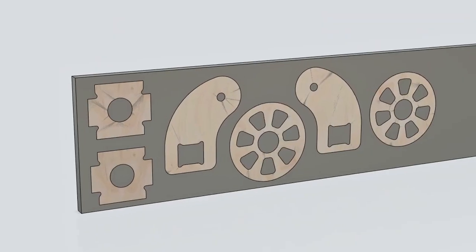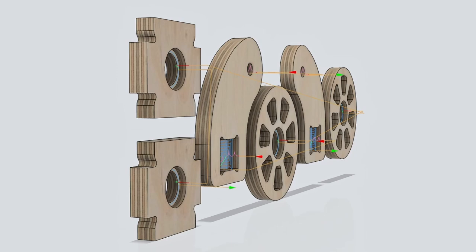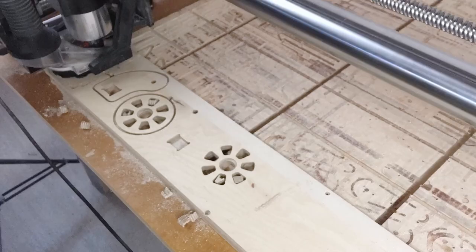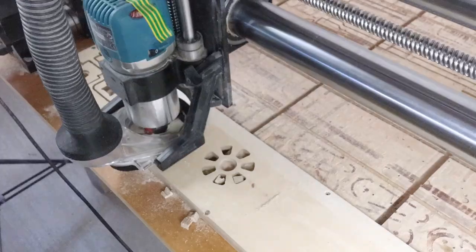After nesting the components and adding tool paths the caster wheel was ready for the CNC operations. First I cut the components for one caster. I wanted to be sure the concept would work before committing to making more of them.